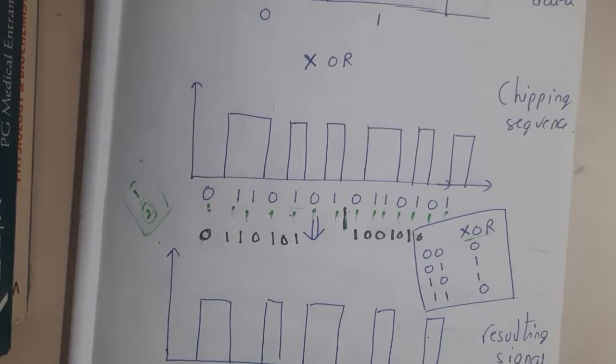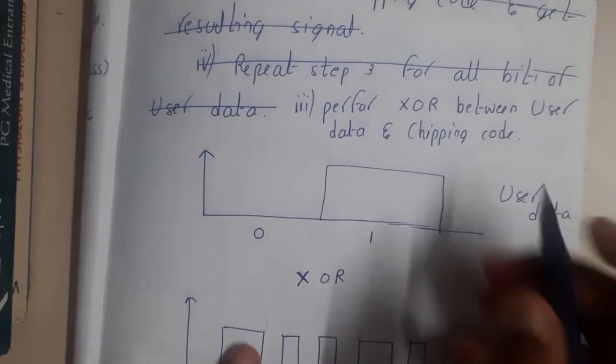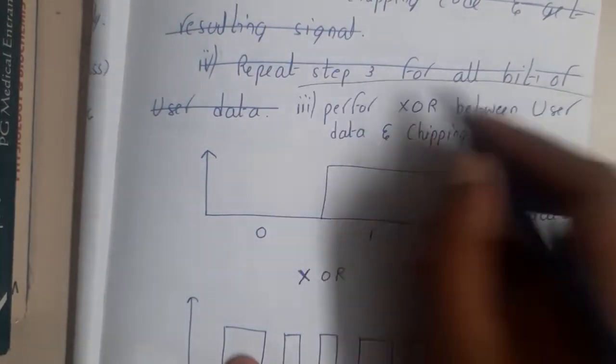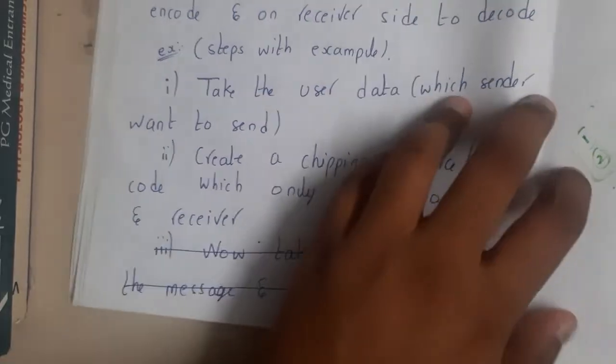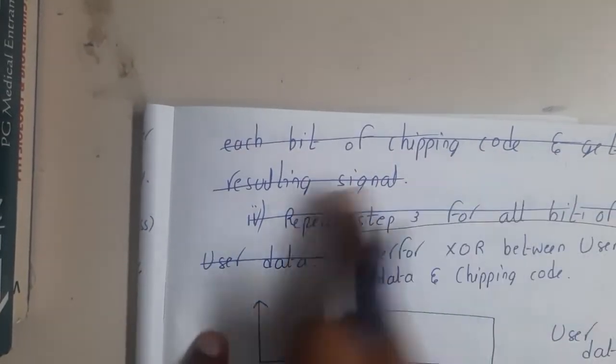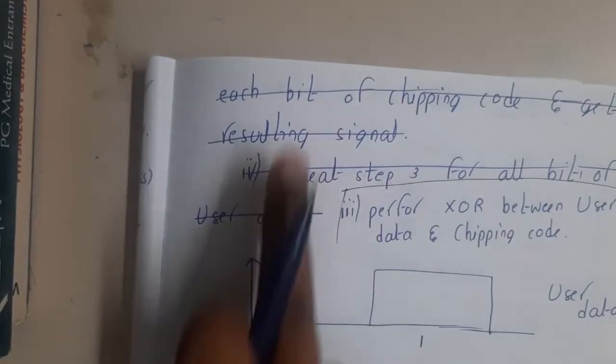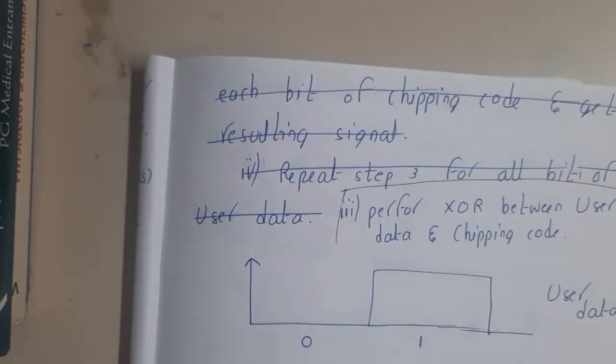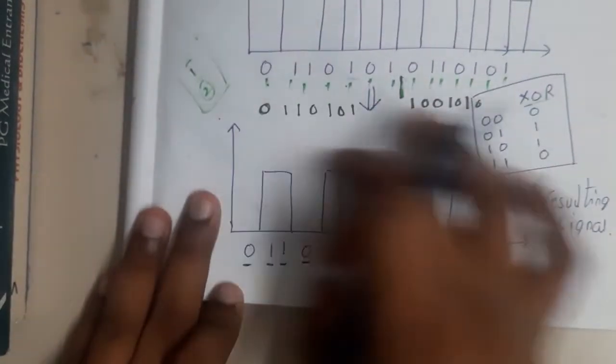If using the other method, write it this way: take the first bit of the message and perform XOR with each bit of the chipping code to get the result, then repeat for all bits of the user data. Here we did direct XOR - we halved the data, first half with 0, second half with 1. We got some data which can now be transferred with no problem.